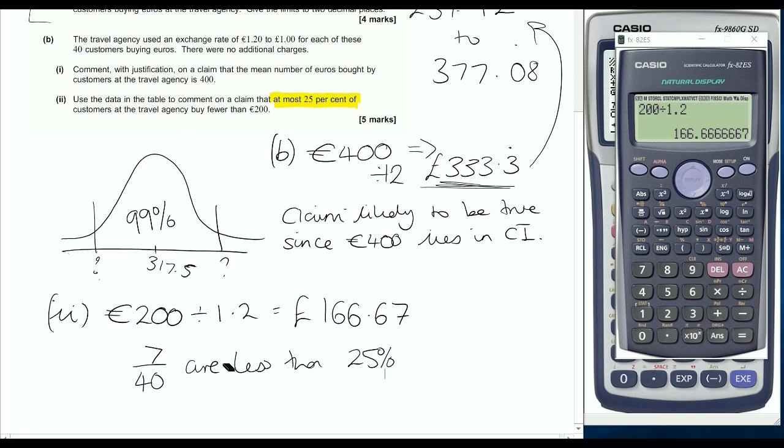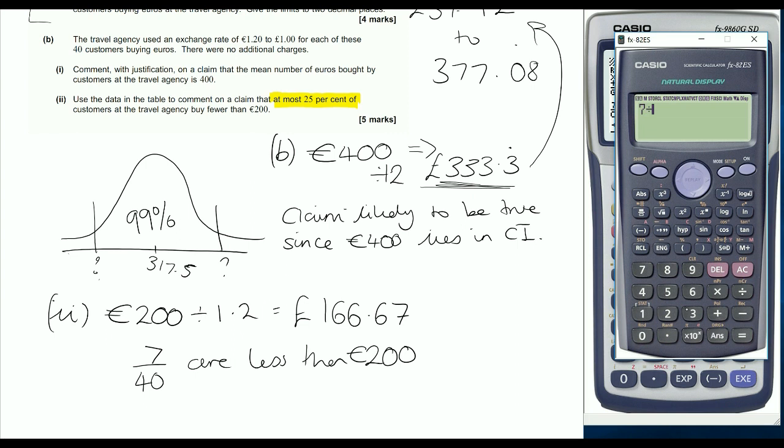Sorry, that's not right. Let me correct that - 7 out of 40 is 17.5% are less than 200 euros. So a lot of students got that and then